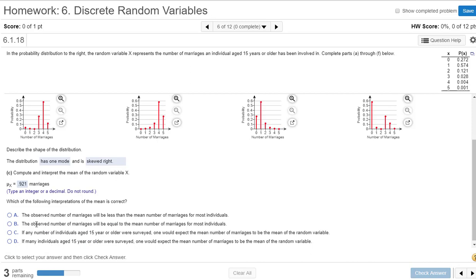Okay, so scan through these descriptions of what the interpretation of the mean is. Let's see, and here's what I'm looking for. If many individuals aged 15 years or older were surveyed, one would expect the mean number of marriages to be the mean of the random variable. In this case, the 0.921, that's the interpretation.